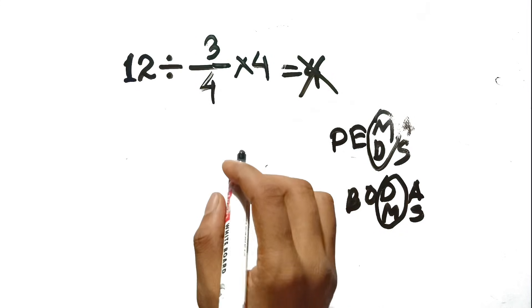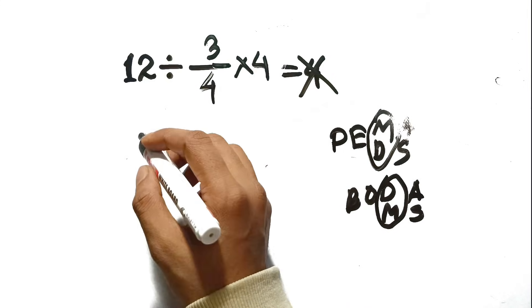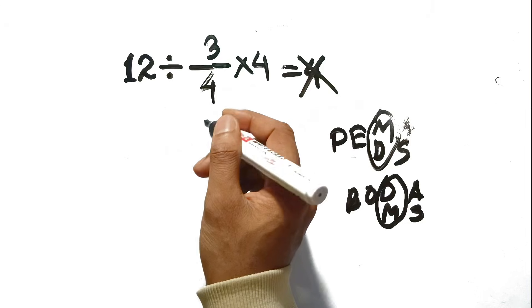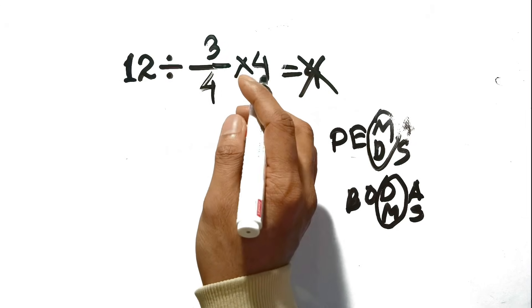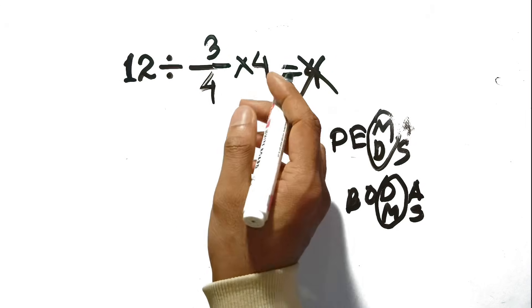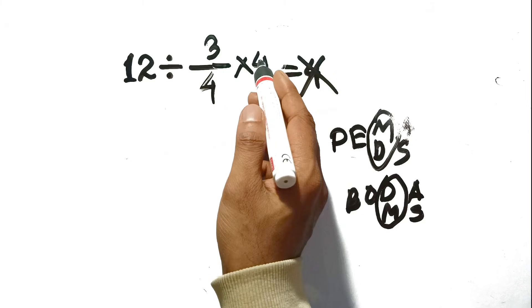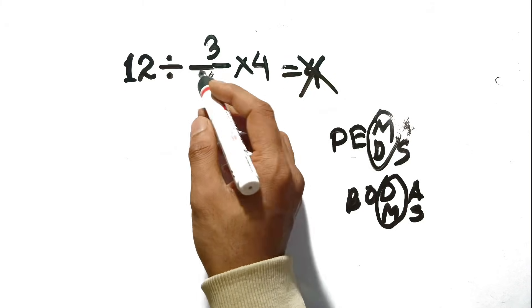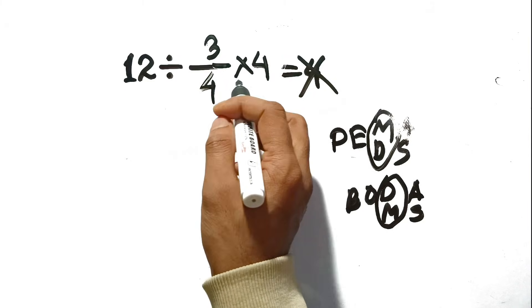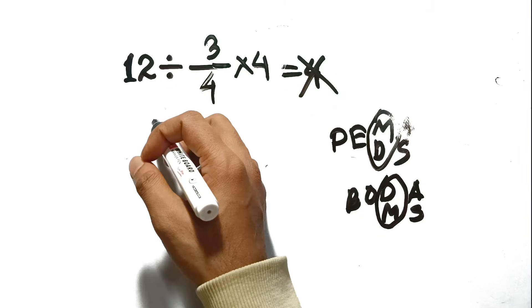The problem is not asking you to multiply 3 fourths by 4. It is asking you to take 12, divide it by 3 fourths, and then take that result and multiply it by 4. The division sign acts like a wall. You can't just reach over the wall and start cancelling numbers on the other side.